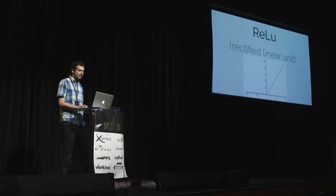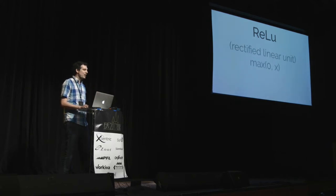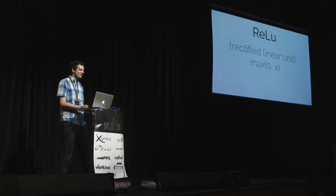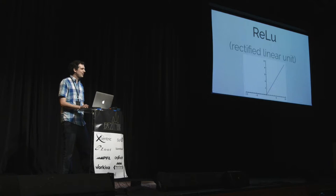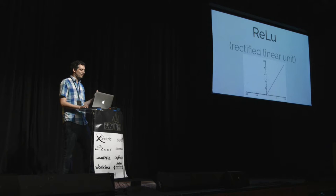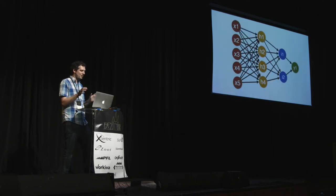Here's what that function looks like graphed. Interestingly, the things that used to be popular — sigmoid and some other functions — ended up working worse than something this simple. It's interesting to watch the machine learning space because we keep doing complicated things and then someone tries something stupidly simple and it performs better. There have been several of those 'why didn't we think this was working when it wasn't' moments. It takes a while for people to really learn what works in these complex situations.